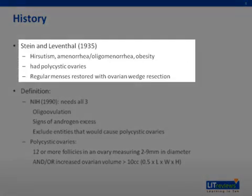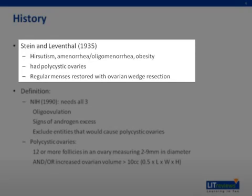PCOS was first characterized in 1935 by Dr. Stein and Leventhal. They collected a series of patients that had demonstrated signs and symptoms of hirsutism, obesity, amenorrhea, and oligomenorrhea. They also had polycystic ovaries, and because of this, it was felt that this was probably the cause of their problems. It was later found that these women had menstrual cycles restored with partial ovarian resections, and therefore PCOS really stuck as the name and likely cause of the disease.